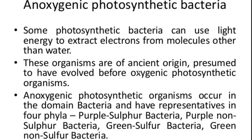Anoxygenic photosynthetic bacteria belong to four phylums of bacteria: purple sulfur bacteria, example is Chromatium; purple non-sulfur bacteria, example is Rhodospirillum; green sulfur bacteria, example is Chlorobium; and green non-sulfur bacteria, example is Chloroflexus.